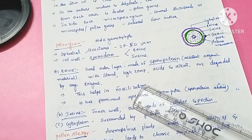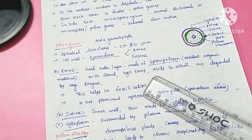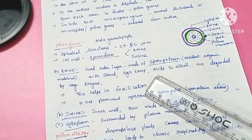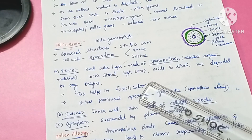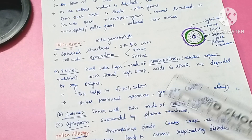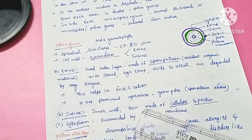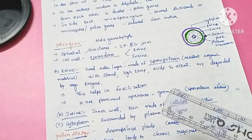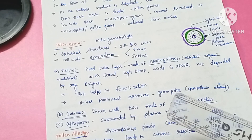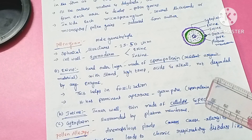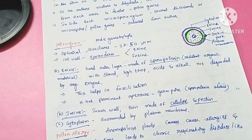Sporopollenin can withstand high temperatures, strong alkalis, and strong acids. No enzyme has been discovered so far that can degrade sporopollenin. Because it is such a strong substance, pollen grains can be easily fossilized and are well protected from hazardous environments when they are transported by biotic and abiotic pollinating agents.